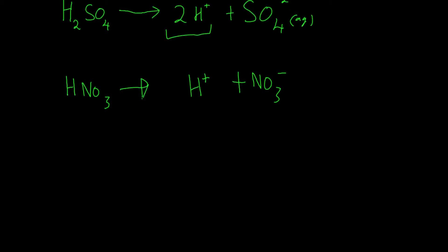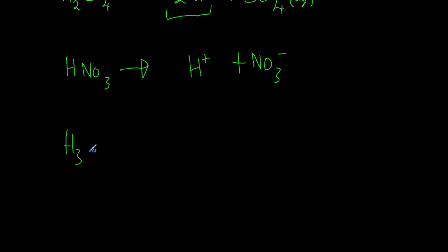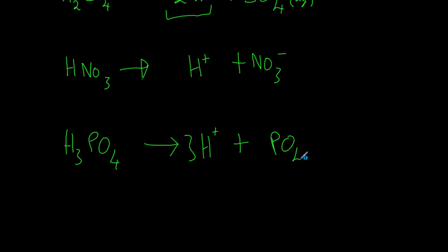One last acid you might have seen is phosphoric acid, H₃PO₄. You can work out that with three hydrogens we get 3H⁺, and therefore PO₄ carries a three minus charge. We have slightly simplified the dissociation going straight to 3H⁺ — in real life it actually occurs one at a time — but this gives you an idea of what is happening with acids when they are in solution.